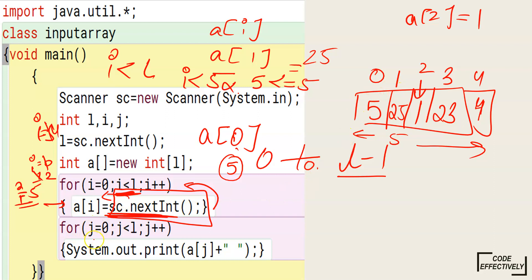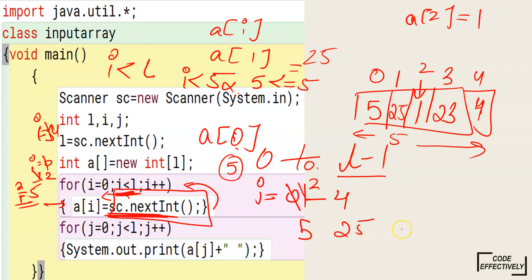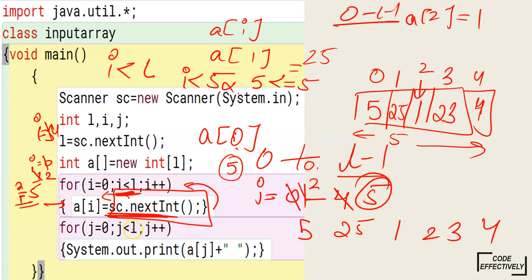Now we use a second for loop controlled by variable j to display the array. It runs similarly from 0 to l-1. When j is 0 it displays a[0] which is 5, then j becomes 1 and displays a[1] which is 25, then 2, then 23 and 4. When j reaches 5, the condition j < l becomes false and the loop ends, reaching the end of the void method and the program terminates.